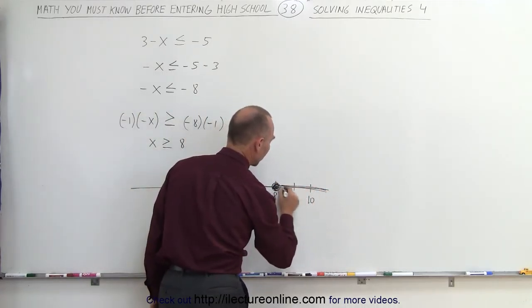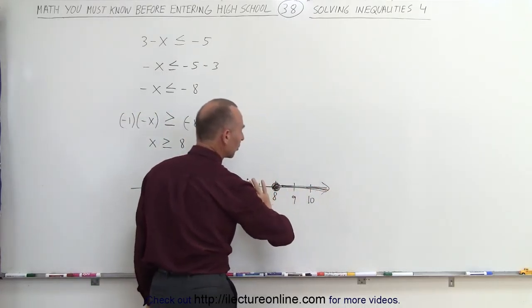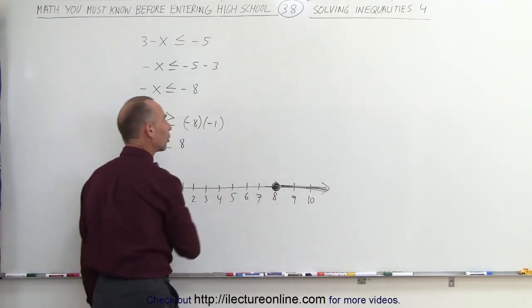So we draw a thicker line this way with an arrow, which means that all the numbers to the right of 8, including 8, satisfy the inequality.